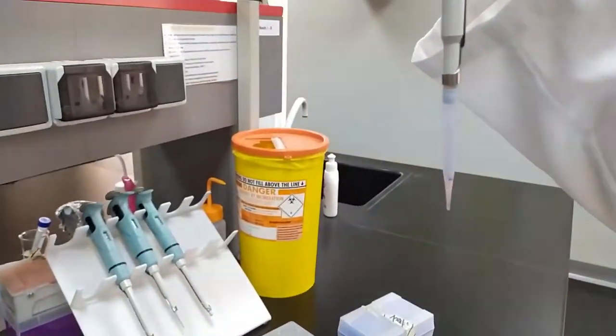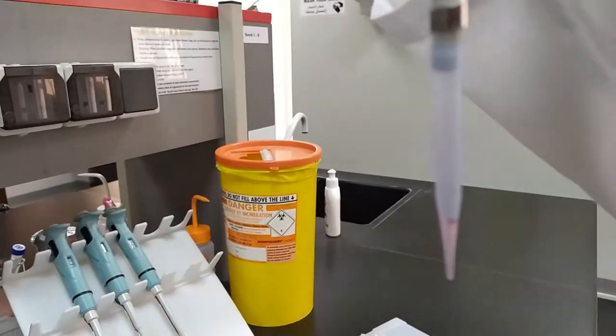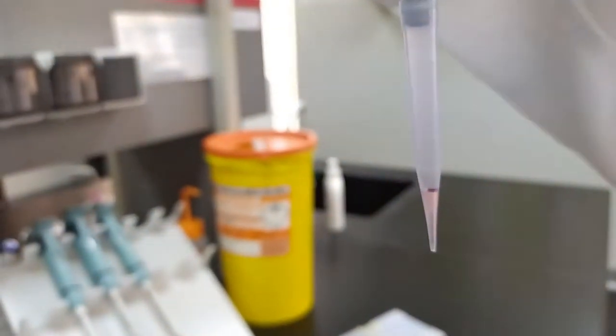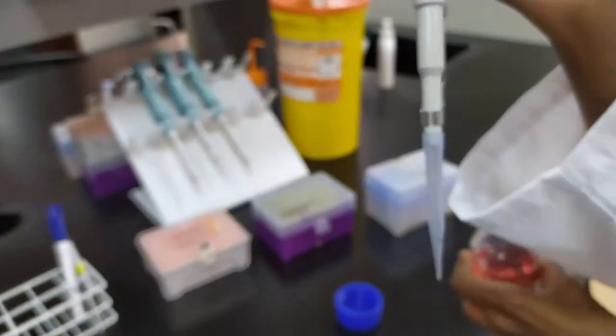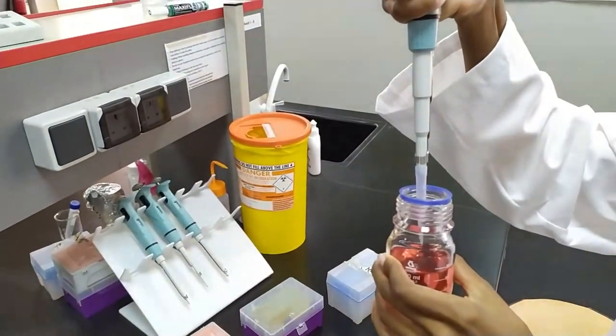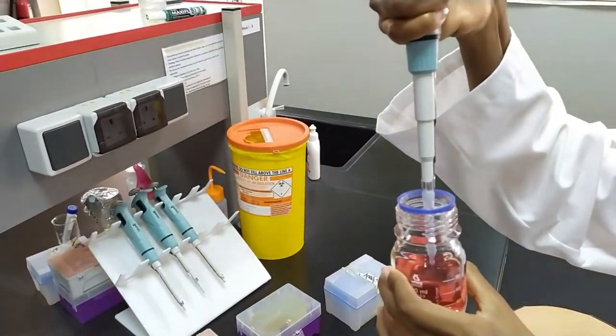Now we're using a red liquid here so we can make the solutions a little bit more clearly visible in these tips. Now that we have a marking for 100 microliters on our micropipet tip, we're going to show what it looks like when you pipette the wrong way.